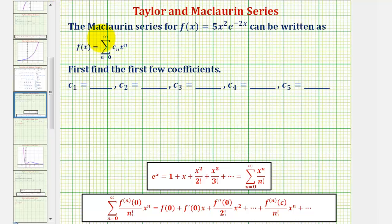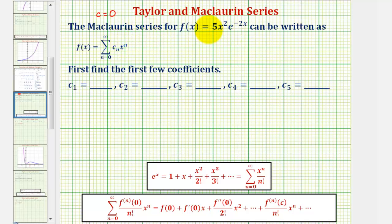Because we're looking for the Maclaurin series, we know we're looking for the power series centered at c equals 0. One way would be to apply the formula where we sum the nth derivative of f evaluated at 0 divided by n factorial times x to the nth. But finding higher order derivatives of f(x) would be very time consuming — it would require both the product and chain rule. So instead, we'll build the Maclaurin series based upon the power series of the more basic function e raised to the power of x.